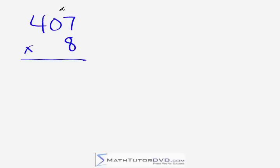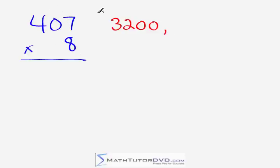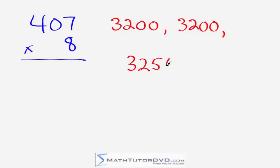The next problem is 407 times 8. Anytime you have a zero in one of these problems, it makes things much easier. From the top: 8 times 400 — 8 times 4 is 32 — gives 3,200. Next, 8 times 0 — the middle digit is 0, so you're adding nothing. You're still at 3,200. Lastly, 8 times 7 is 56, so the answer is 3,256. Because of the zero, it eliminates almost one-third of the mental gymnastics needed.